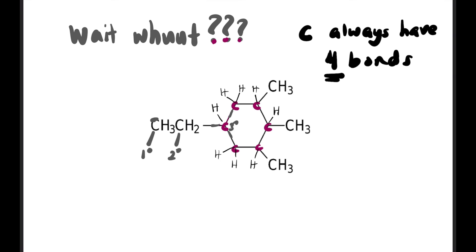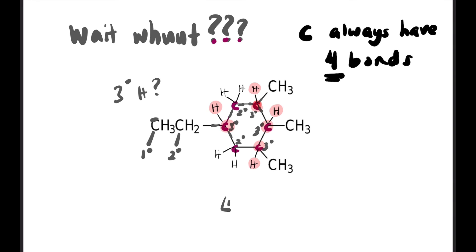Remember, in a skeletal structure we don't show hydrogens, but we know they're there. To classify, look at how many carbons are attached to each carbon. Going through the structure: some are tertiary, some are secondary. For the total count of tertiary hydrogens: we find all tertiary carbons — there's one, two, three, and actually a fourth one that's also tertiary since 3 carbons are attached to it. So there are 4 tertiary carbons, meaning 4 tertiary hydrogens.